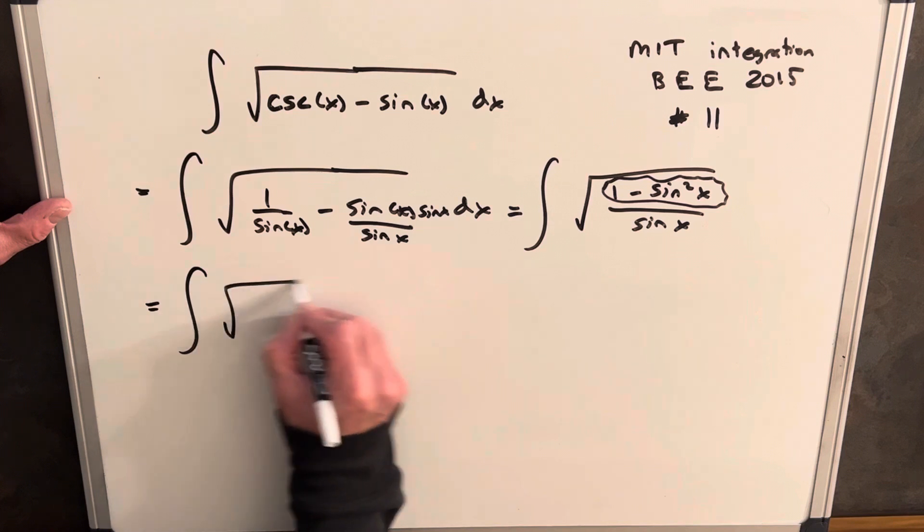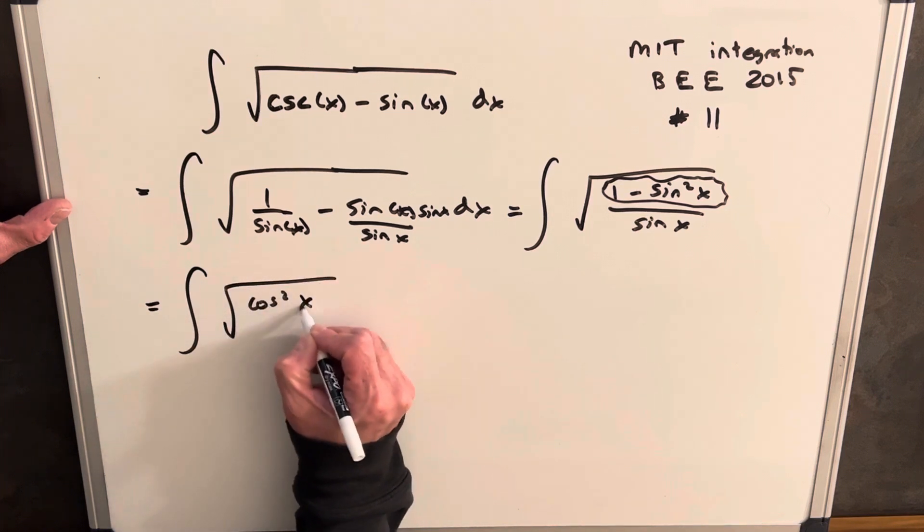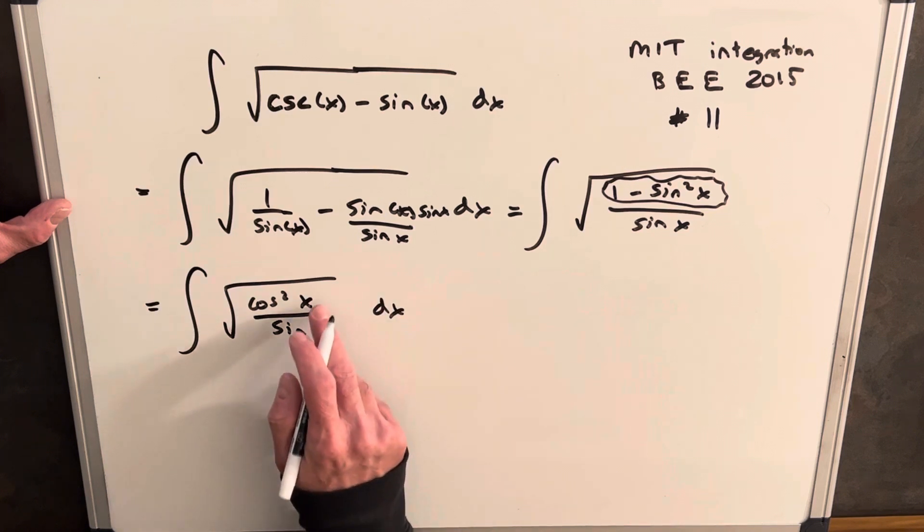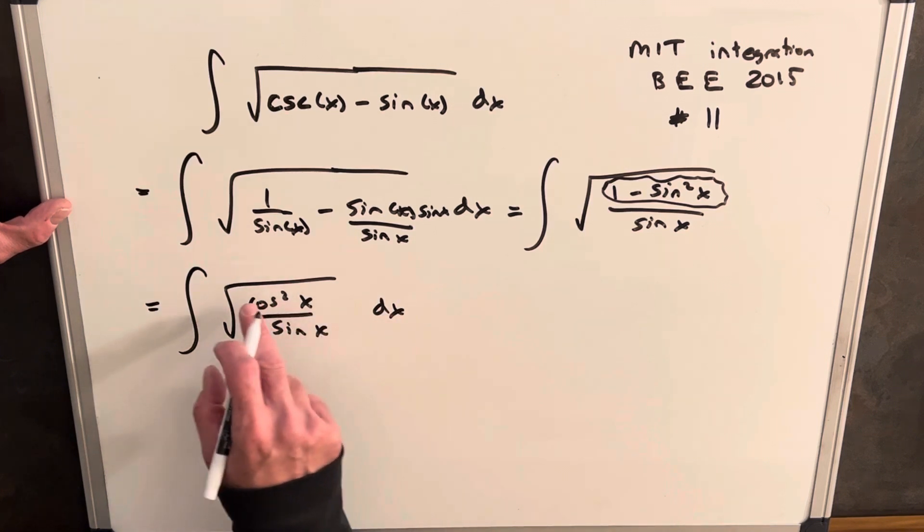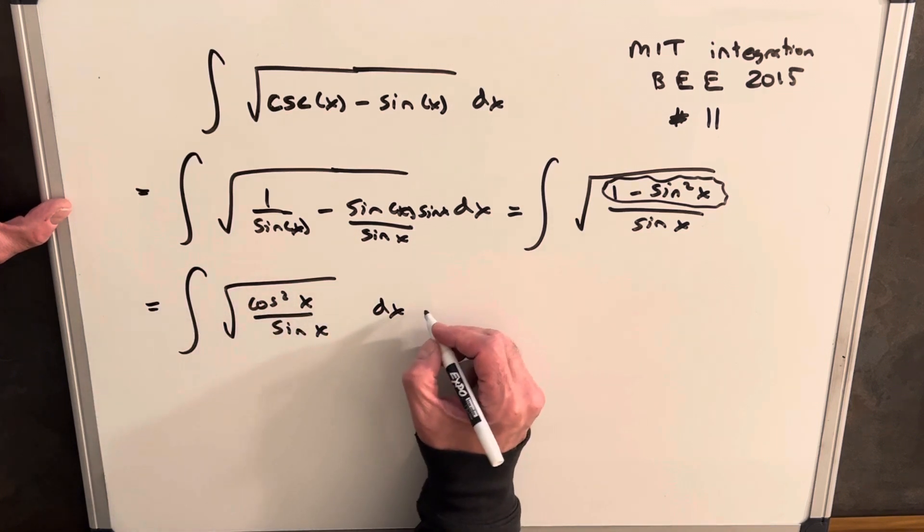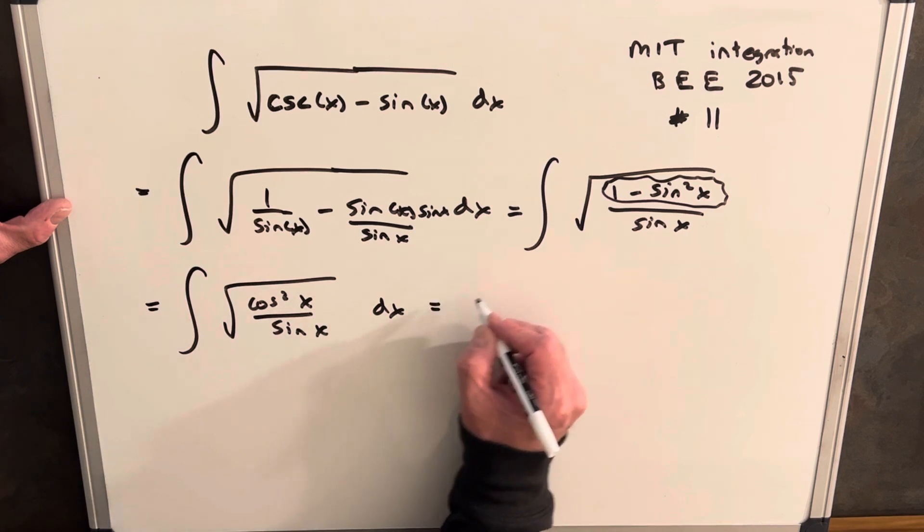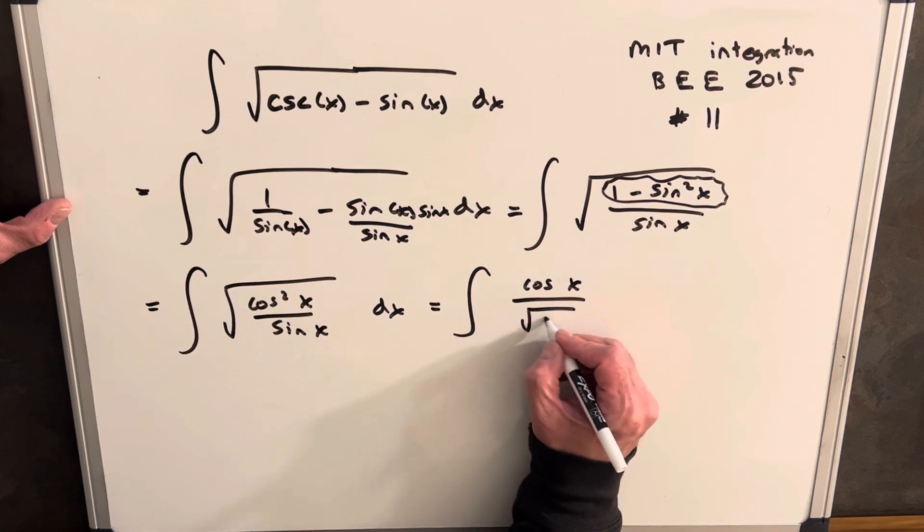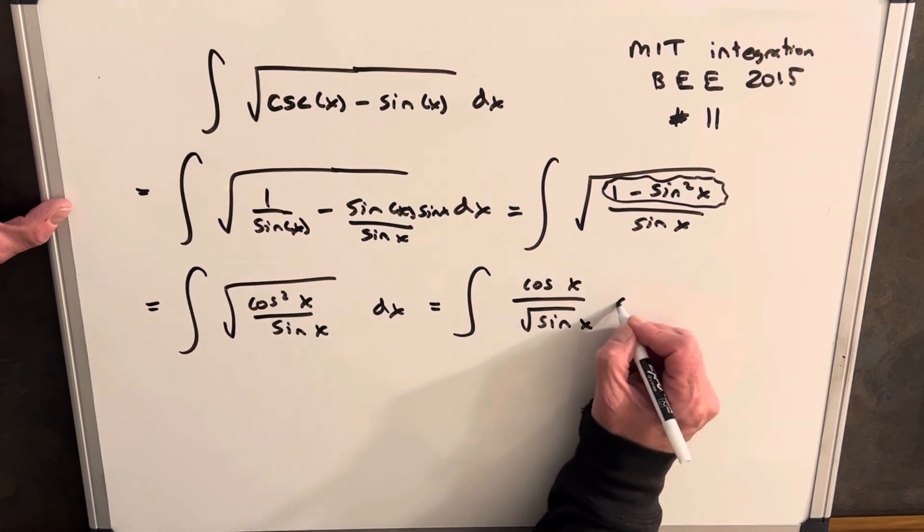So then we'll have the integral of the square root of cosine squared x over sine x dx. But now it's cosine squared, and we have the square root. We'll take that out as cosine. So we can write this as just cosine of x over the square root of sine x dx.